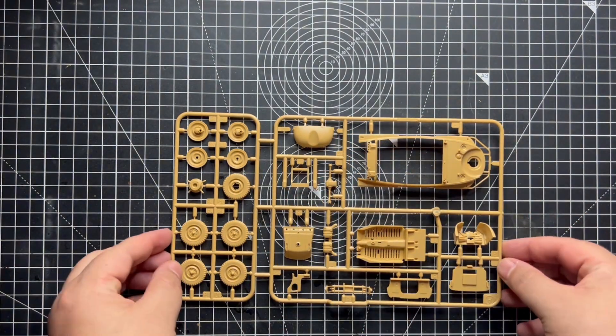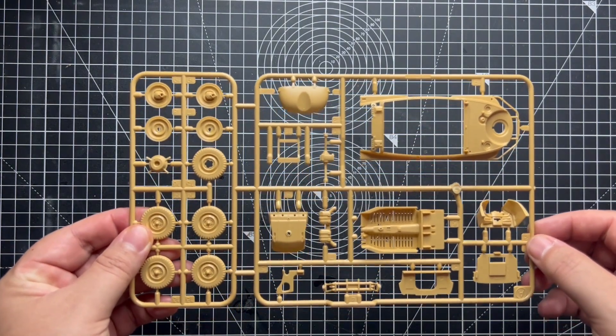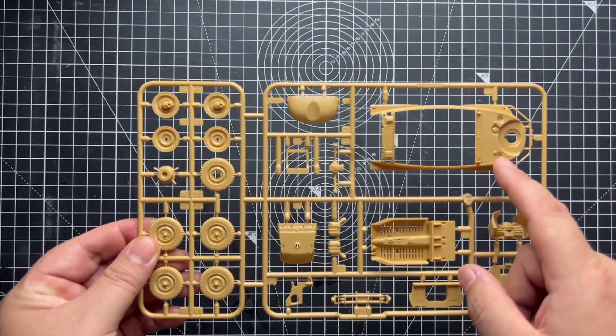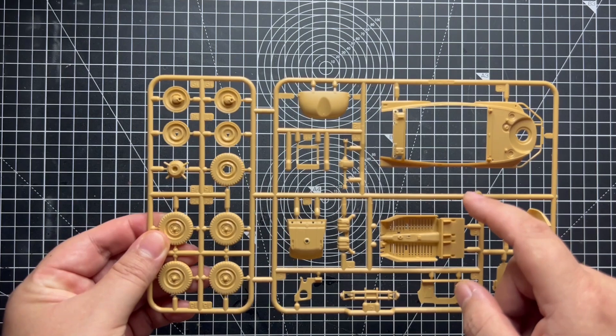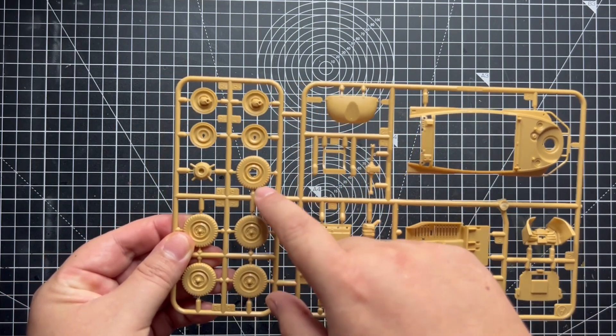Having a look at the sprue we can see again that there's no flash and it's all very nice clean crisp detail although the detail is minimal. Some nice details on the wheels, nice bit of tread and some wheel nuts.